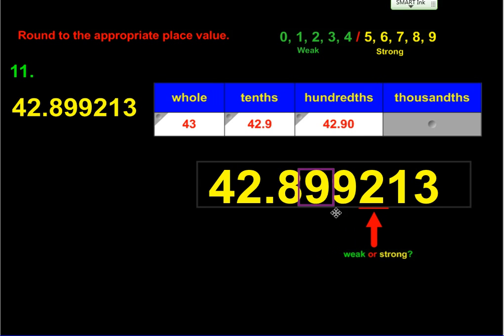Last, we round to the thousandths. We put the box around the digit in the thousandths place and underline the digit to its right. We're looking at a two, which is a weak number. It's not going to change that nine, so nothing gets changed. We're left with 42.899. Please use the problems done tonight to help you solve the additional problems on your homework. Remember, the key to success in math is not just working hard, but working smart.